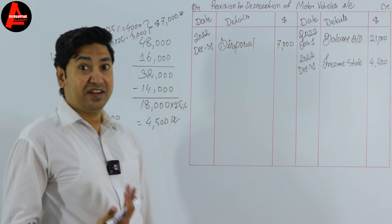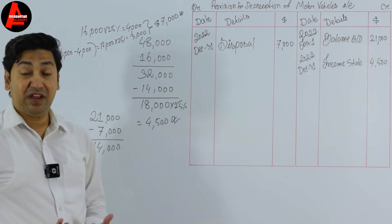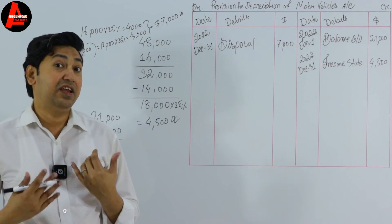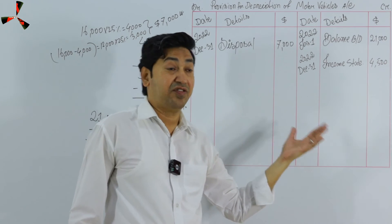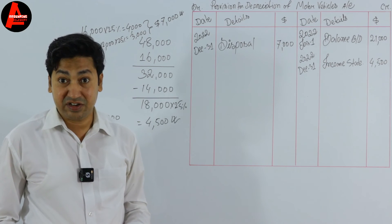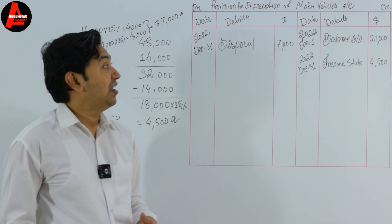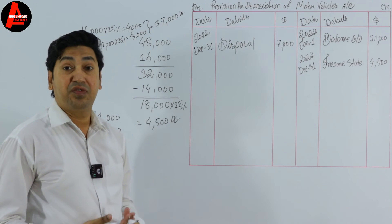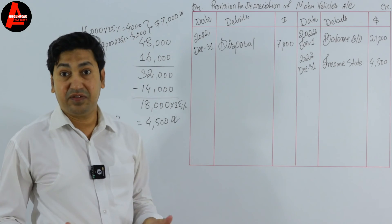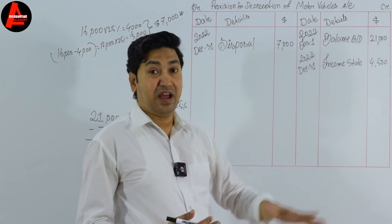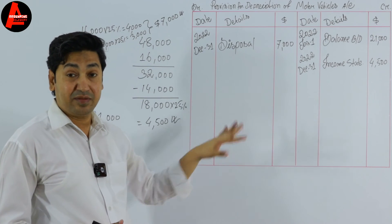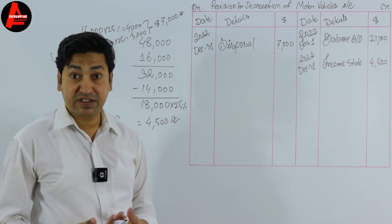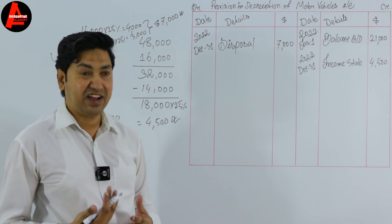In summary, there are only three items in the provision for depreciation account: first, the opening balance (balance b/d on the credit side, given in the question); second, the current year depreciation (calculated and entered as income statement on the credit side); third, the disposal depreciation (entered on the debit side if an asset was disposed of). If any of these are not applicable, you simply omit them.